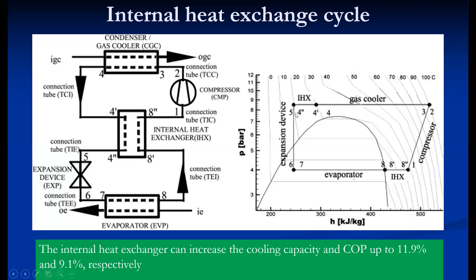Four-double-dash and five are close, and five to six is the expansion. Six and seven coincide — no losses are considered here, though practically there are some heat gain and heat loss. Seven to eight is the evaporation process. Then eight enters into the heat exchanger at eight-dash, and eight-dash to eight-double-dash is where it gains heat from the gas cooling line, which is the high pressure gas line. This is the low pressure gas line.